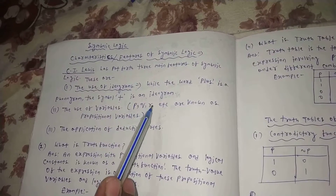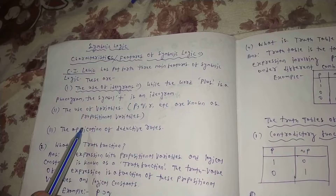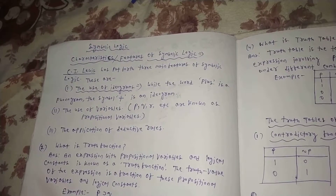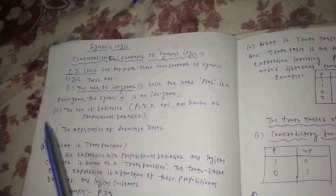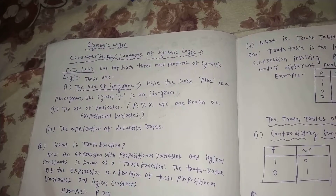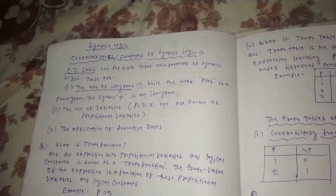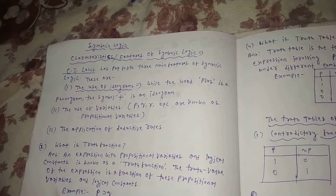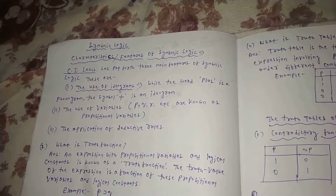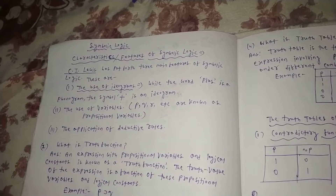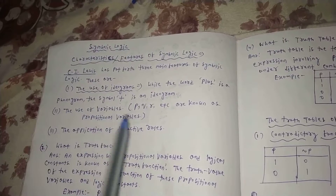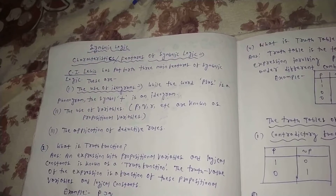P, Q, R, etc. are known as propositional variables. When variables are used in propositions, they are called propositional variables. These variables vary in different truth functions.